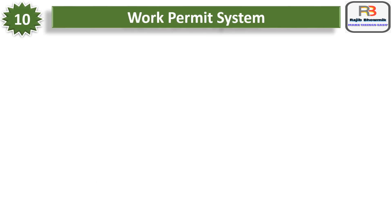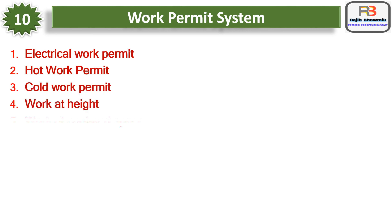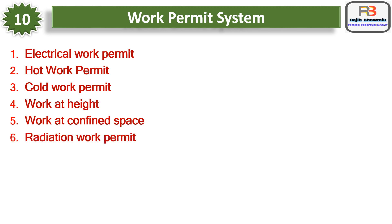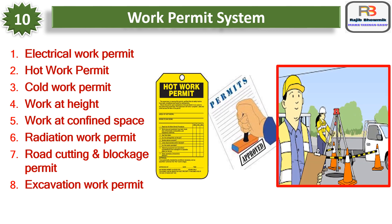Number ten is Work Permit System. Various work permits include: electrical work permit, hot work permit, cold work permit, work at height, work at confined space, radiation work permit, road cutting and blockage permit, excavation work permit, etc. The work permit is to be obtained from the Safety Department before commencing this hazardous work. Proper signs are to be displayed while the work is in progress, all procedures are to be strictly followed, and after completion the permit is to be submitted to the Safety Department.